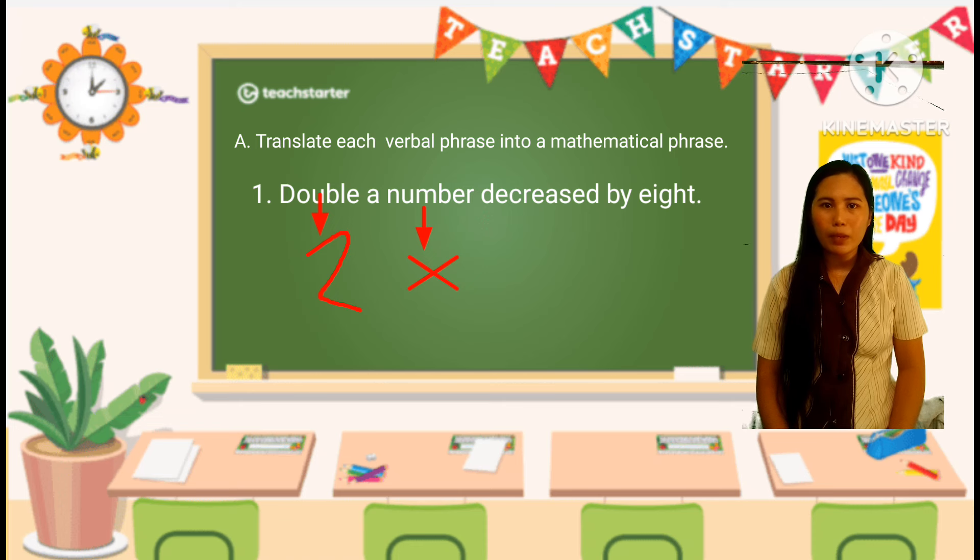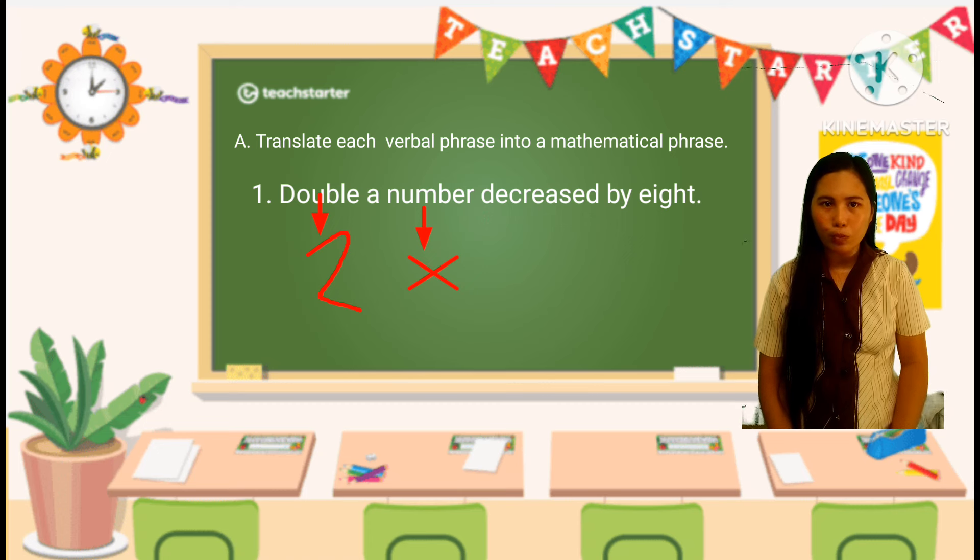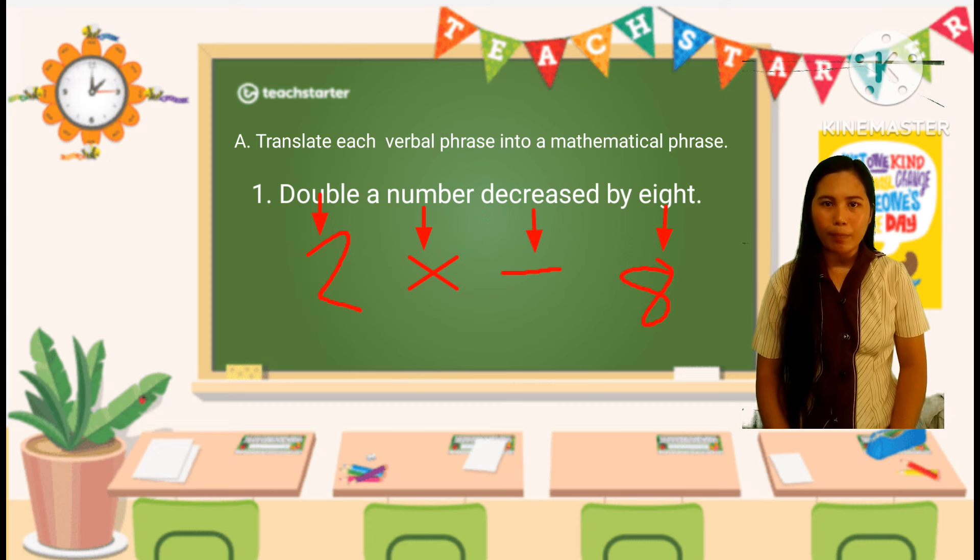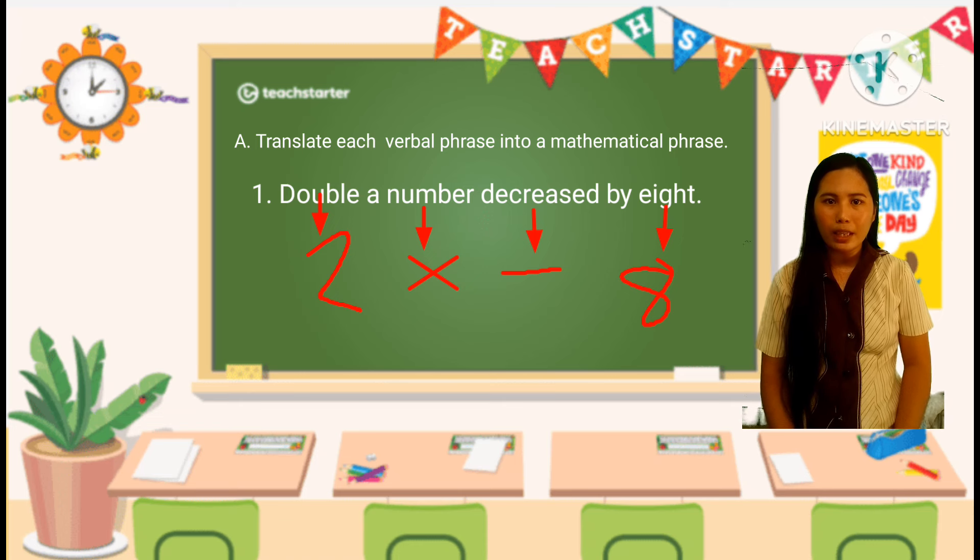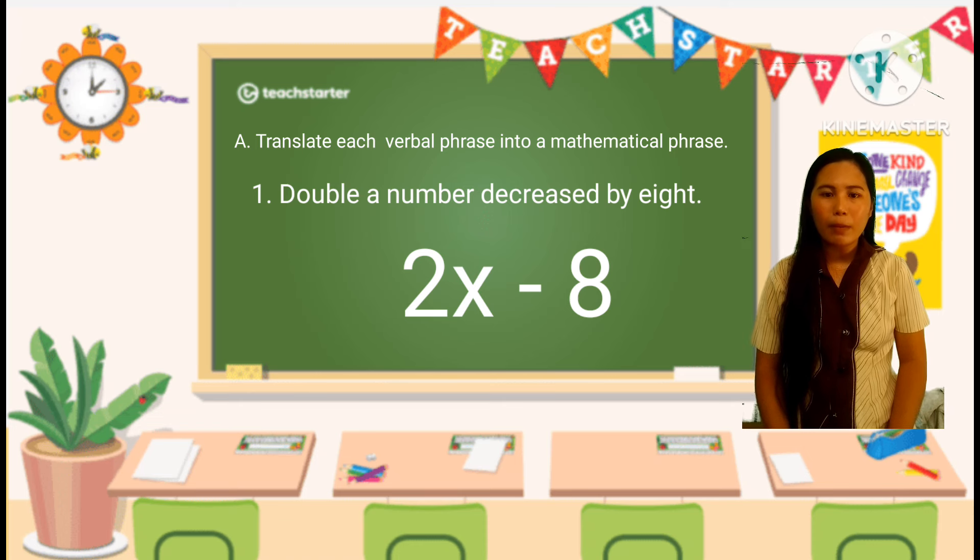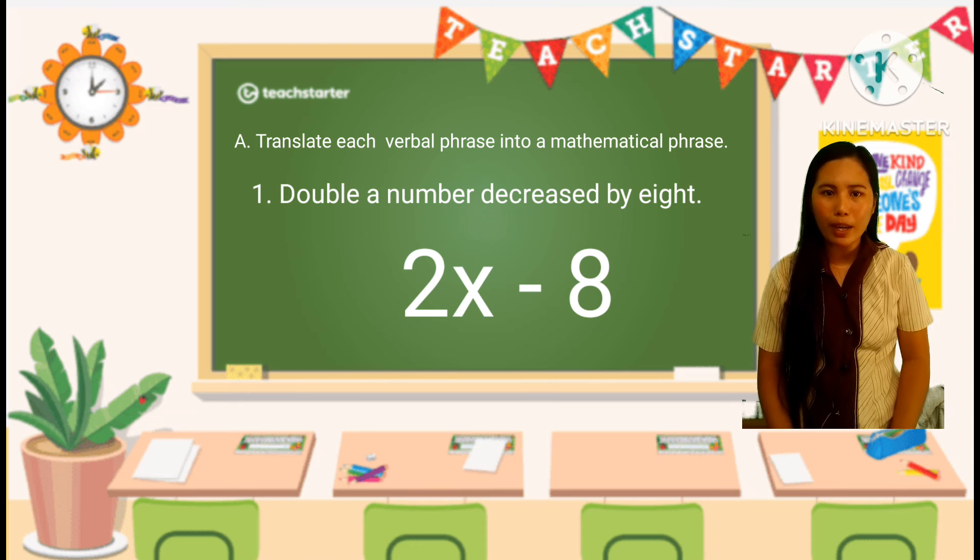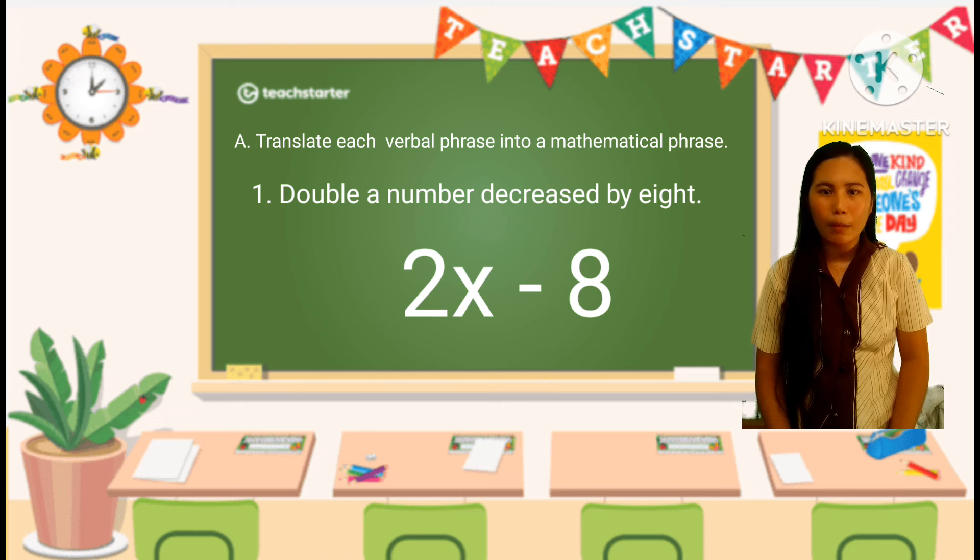Double a number can be represented as 2x since we are multiplying the number x by 2. Decrease by 8 means we subtract 8 from the result of doubling the number. So, the complete expression is 2x minus 8. Mathematical phrase for double a number decreased by 8 is 2x minus 8.